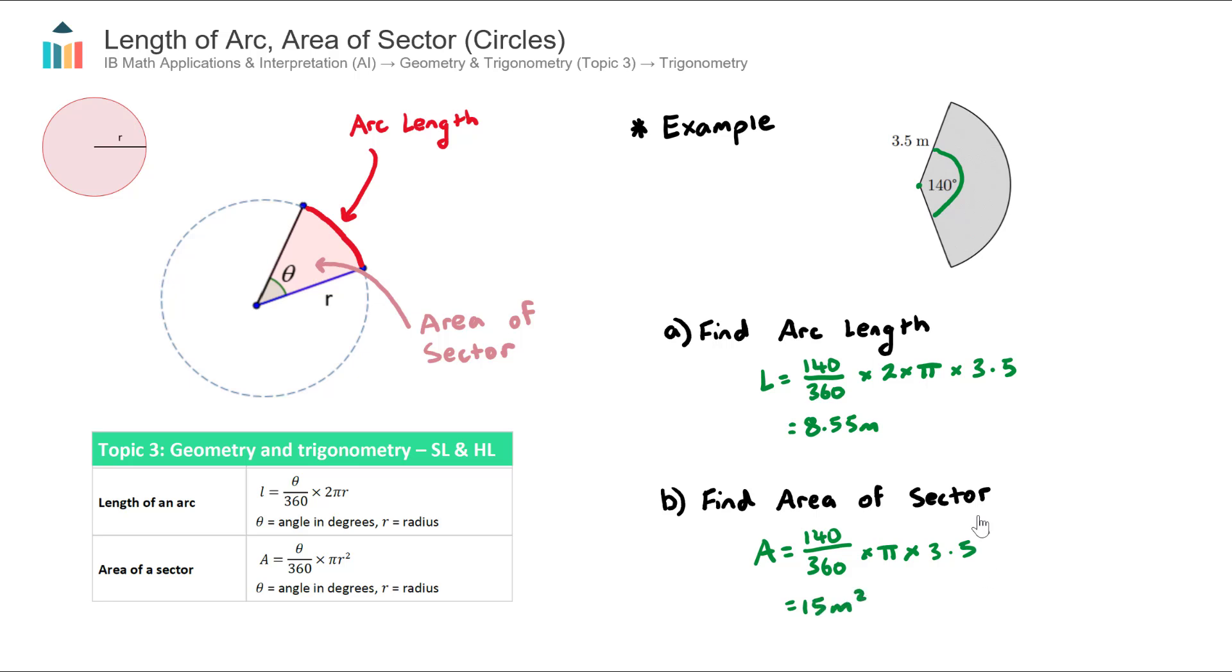IB exam questions will be a little trickier - maybe you have to find something else first, then find the radius or the angle. But once you have the angle and radius, finding the arc length and area simply comes down to your confidence using these two formulas. That's a quick overview of length of arc and area of a sector. I recommend practicing some of these questions in the question bank.